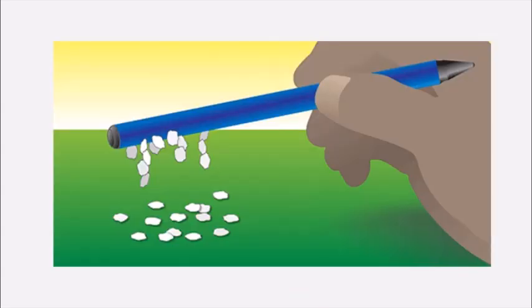Whenever you rub a plastic ruler or plastic pen against your hair and take that plastic pen near tiny pieces of paper, you will see that those tiny pieces of paper go and stick to the plastic rod. So why do they stick to the plastic rod? Have you ever thought why those tiny small pieces are going and attaching to that plastic rod? Let's understand why these go and attach to the plastic rod.